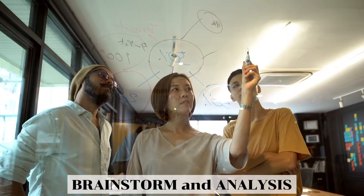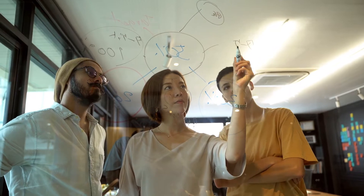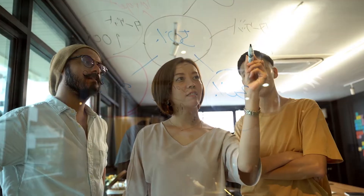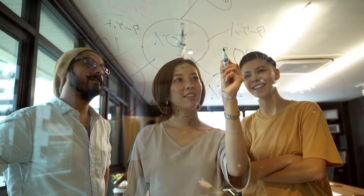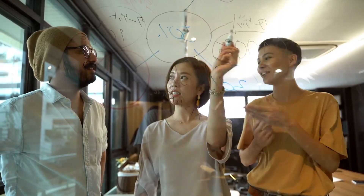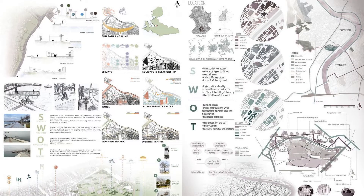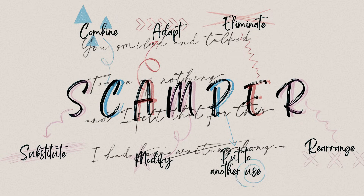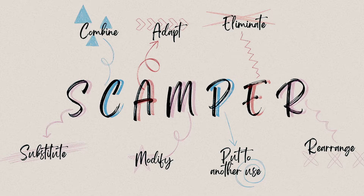Brainstorm and Analysis: Brainstorming, a fundamental aspect of the design process, involves the dynamic generation and evaluation of ideas. It encourages the exploration of diverse possibilities by expanding thoughts without immediate judgment or filtering. The created environmental analyses evaluate the pros and cons of factors including the natural environment, physical environment, social environment, and economic environment. To ignite creativity, various techniques like mind mapping, sketching, word association, or SCAMPER can be employed.